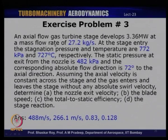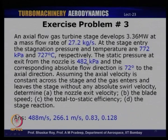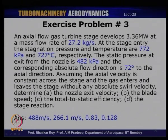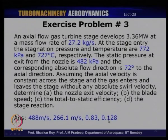Exercise problem 3: An axial flow gas turbine stage develops 3.36 MW at a mass flow rate of 27.2 kg/s. Stage entry stagnation pressure and temperature are 772 kPa and 727°C. Static pressure at nozzle exit is 482 kPa, absolute flow direction is 72° to the axial direction. Assuming constant axial velocity and axial entry and exit, determine nozzle exit velocity, blade speed, total-to-static efficiency, and stage reaction. Answers: 488 m/s, 266.1 m/s, 0.83, and 0.128.